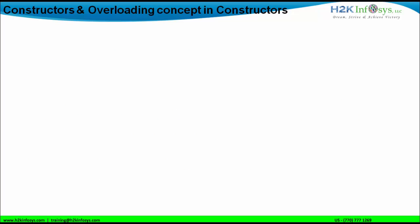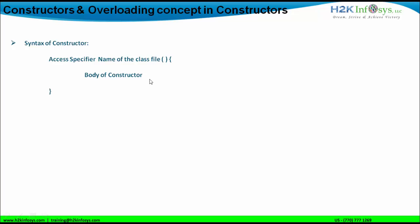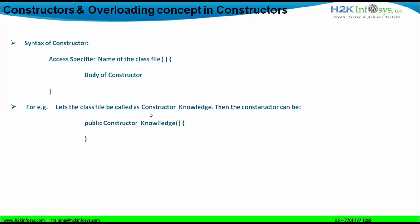If you go further and understand the theoretical syntax of a constructor, it will have an access specifier followed by the name of the class file, followed by a parenthesis, then an opening curly brace and a closing curly brace. Within the opening and closing curly brace, you can have the body of the constructor. For example, if there is a class file called 'constructor_knowledge', it can have a constructor as 'public constructor_knowledge()' followed by the opening and closing curly brace. This is how a constructor looks.